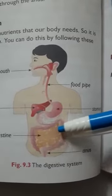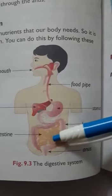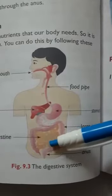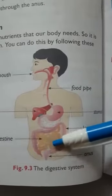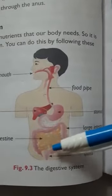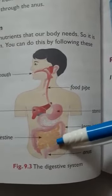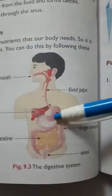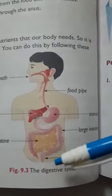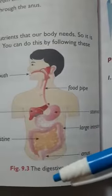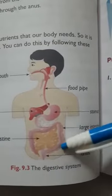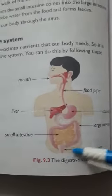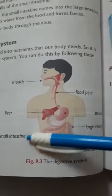These nutrients are absorbed by the blood through the walls of the small intestine. The blood then transports these nutrients to all parts of our body, giving us energy to work and carry out all body functions.